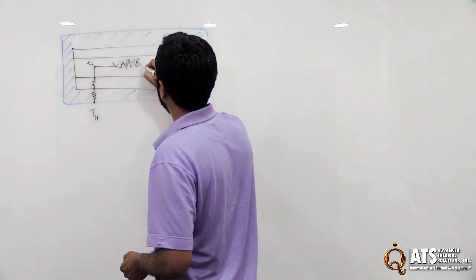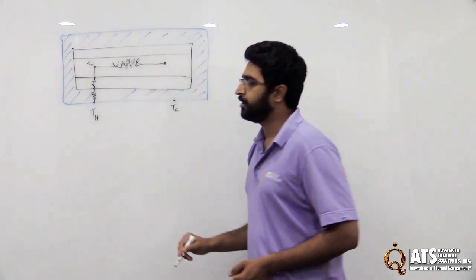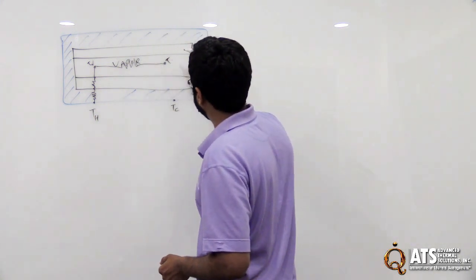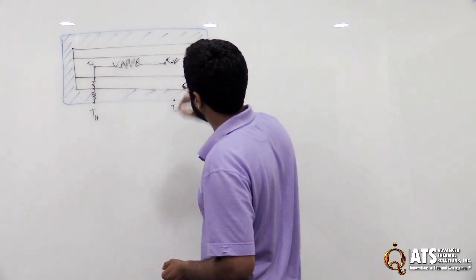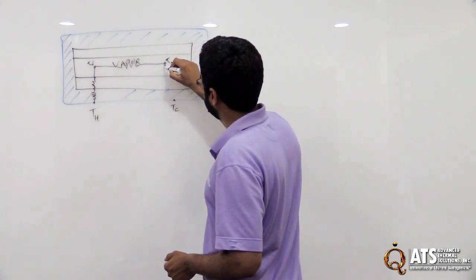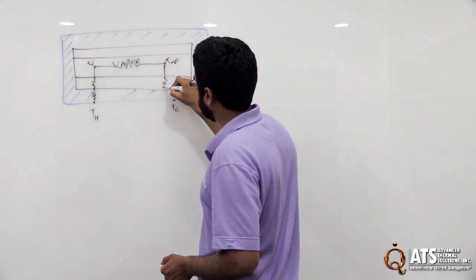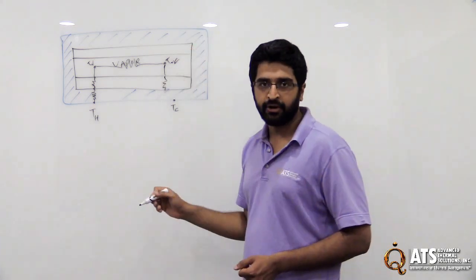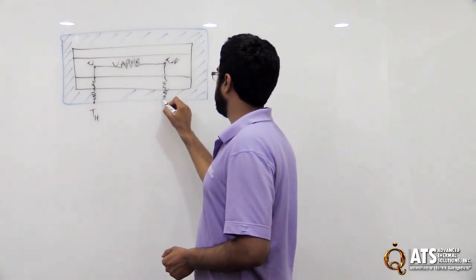And you end up with your TVC, let's call it. And again, same thing going back, going back down this way. So you have a resistance coming back out and then a resistance again in the case.